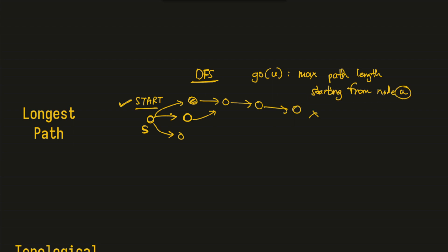The answer for any node with no adjacent elements would be zero, because we are counting edges and there are no edges from such a node. From there, values propagate upward: a node one step away gets value one, two steps away gets two, and so on. So go(S) is evaluated as one plus go(child), which is the main recurrence.